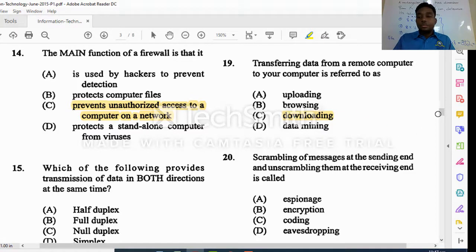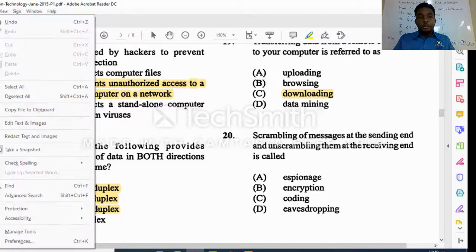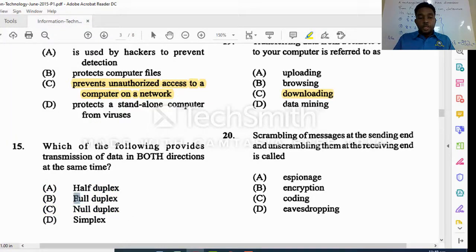Number fifteen says which of the following provides transmission of data in both directions at the same time. Half duplex is both directions but not at the same time. Full duplex provides data in both directions at the same time. We don't have anything named null duplex. Simplex would transfer data in only one direction only. Half duplex is both directions but not at the same time, so full duplex is both directions and at the same time.